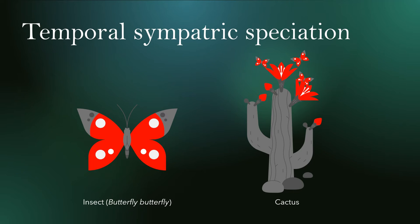To understand sympatric speciation, I'll look at a quick example examining a temporal effect on speciation. For this example we have a species of insect, which you can see on the left, which feeds on the red flowers of a particular species of plant — in this case a cactus. The life cycle of this insect is annual and aligns with the blossoming cycle of the cactus, so when the insects emerge from their eggs the cactus has blossomed, giving the insects ample food supply for their mating and egg-laying.